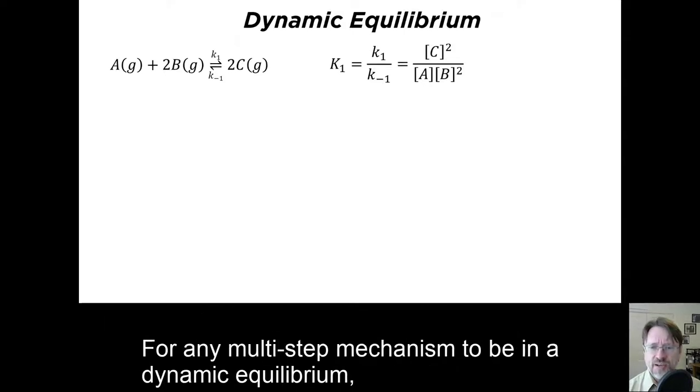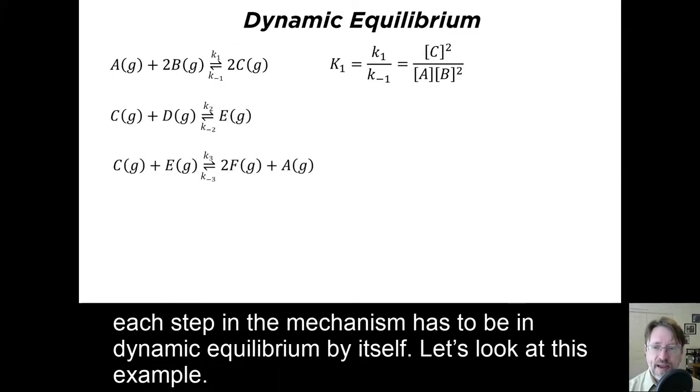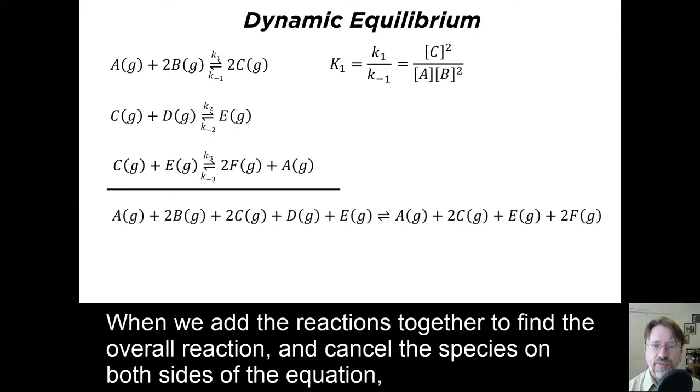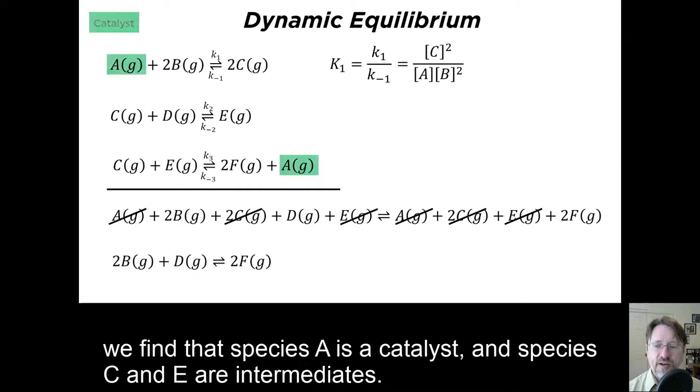For any multi-step mechanism to be in dynamic equilibrium, each step in the mechanism has to be in dynamic equilibrium by itself. Let's look at this example. When we add the reactions together to find the overall reaction, and cancel the species on both sides of the equation, we find that species A is a catalyst, and C and E are intermediates.